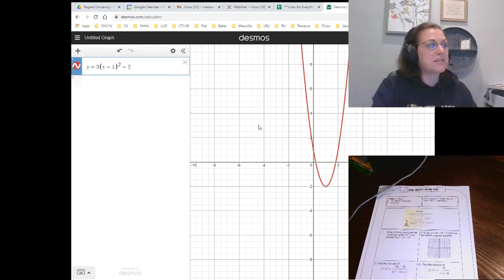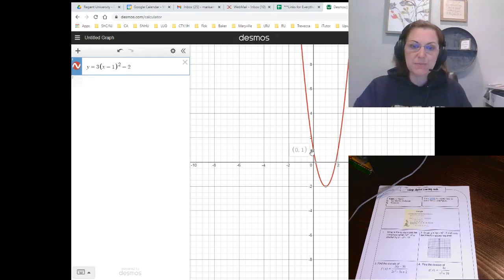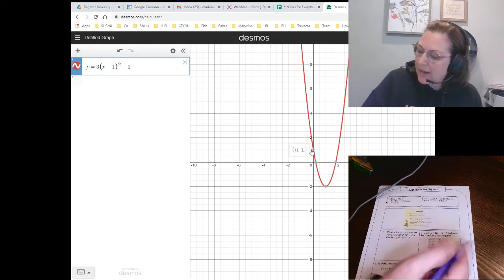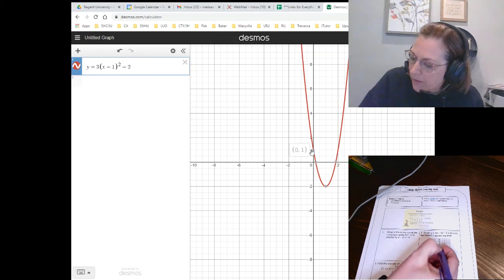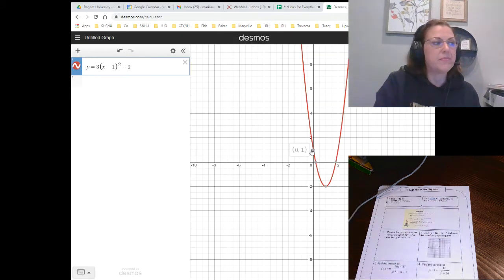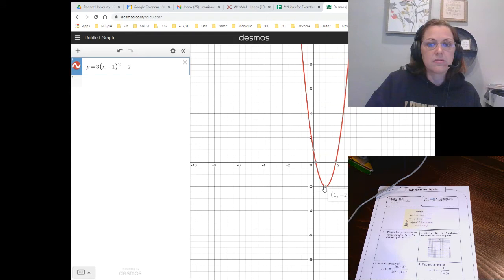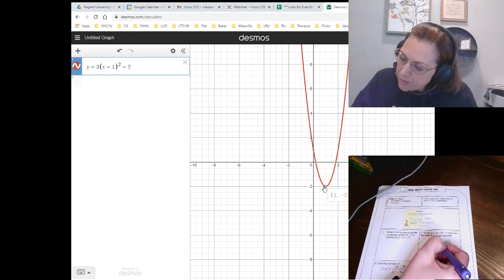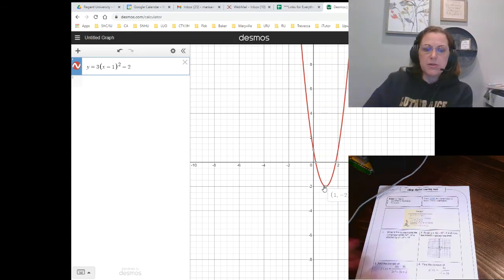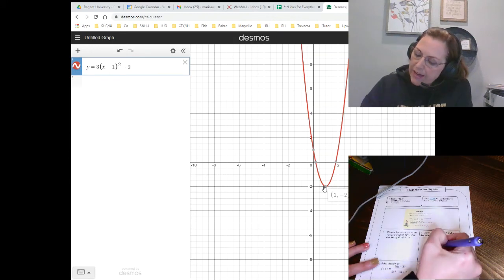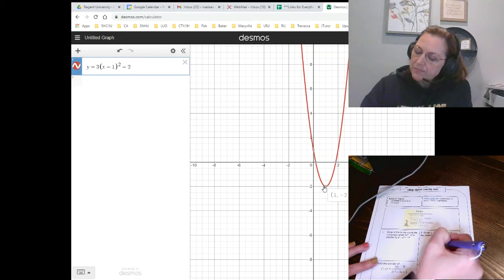Now, the thing I like about Desmos is it highlights some of these key points. So it tells me like that point is 0, 1. I can easily go plot that on my graph. And this point down here is 1, negative 2. I can easily plot that as well. You get the idea. You can get your points, these key points from Desmos. And then you can draw your graph.